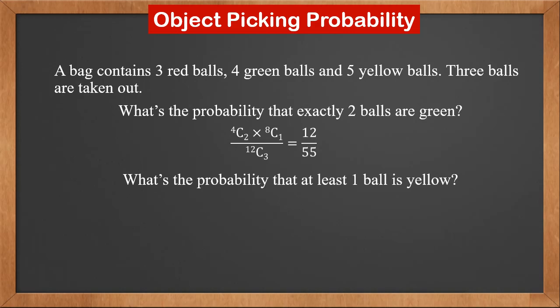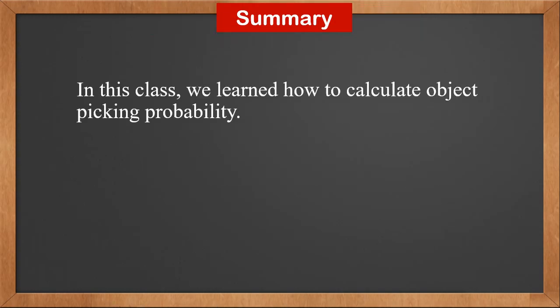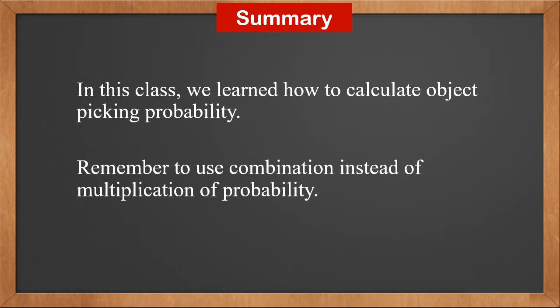What's the probability that at least one ball is yellow? At least one is solved as one minus none. No yellow means all three balls are selected from the three red and four green balls, giving 7C3. So the answer is one minus 7C3 over 12C3, which is thirty-seven over forty-four. Again, we see how easy it is to solve object picking probability problems with combination. Remember to use combination instead of multiplication of probability.